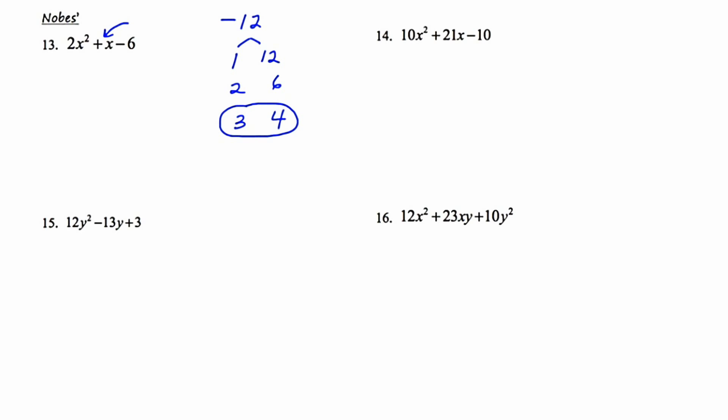Now I'm going to figure out positives and negatives. The product has to be negative 12, so the signs need to be different. But when I add, I need to get positive 1. So it's going to be negative 3 and positive 4. Multiplying gives negative 12, and adding gives positive 1 — so these are the right numbers. Next I'm going to create two fractions. The denominators of those fractions are going to be the winning numbers: negative 3 and positive 4. I write the positive sign for emphasis — it's a good idea to leave it.